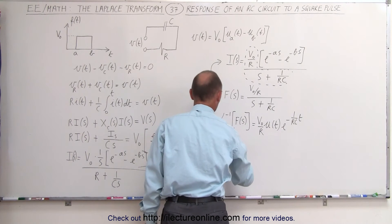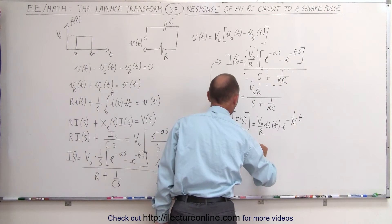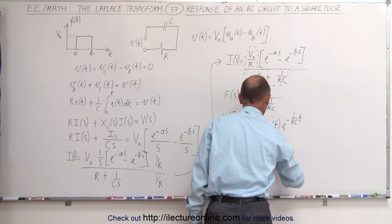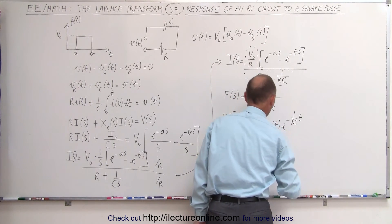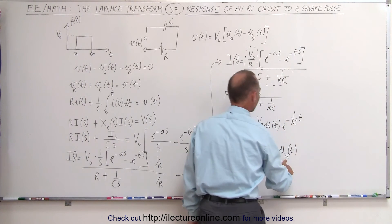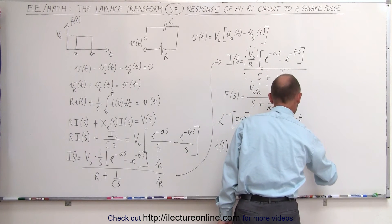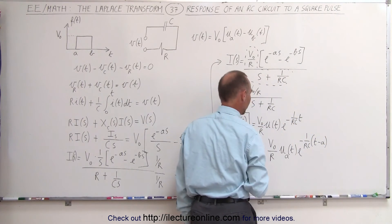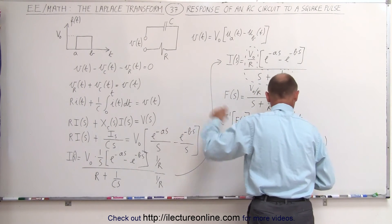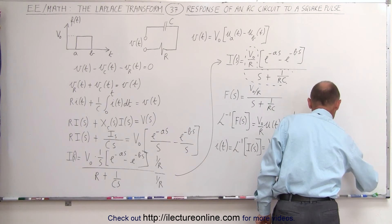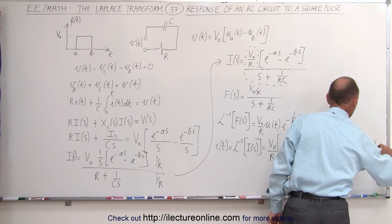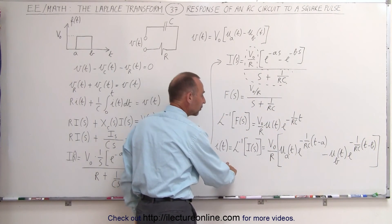The current in the time domain — the inverse Laplace transform of I(S) — is V sub nought over R times U of A times E to the minus (1 over RC) times (T minus A), minus V sub nought over R times U of B times E to the minus (1 over RC) times (T minus B). That is the current response to this particular input.